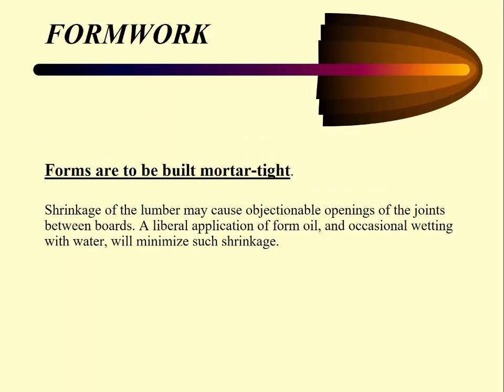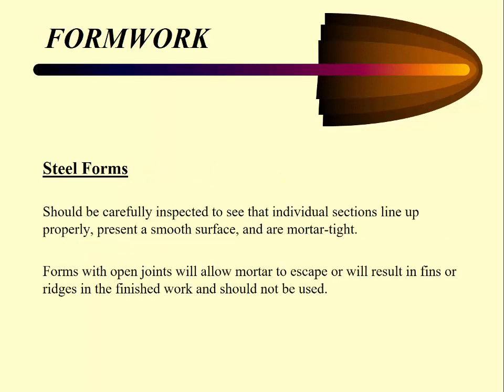Forms are to be mortar tight — you don't want mortar coming out. Any shrinkage of lumber may cause openings that need to be sealed. Make sure they've got form oil and the forms are wetted with water to minimize shrinking. It does not have to be watertight, just mortar tight. Steel forms should be carefully inspected to see that individual sections line up properly and present a smooth, mortar-tight surface. Forms with open joints will allow mortar to escape, resulting in extra work for the contractor to grind down. We've had issues where steel forms for culverts were too wavy, and we have specifications for straightness.